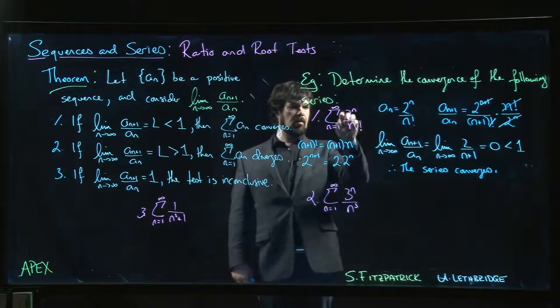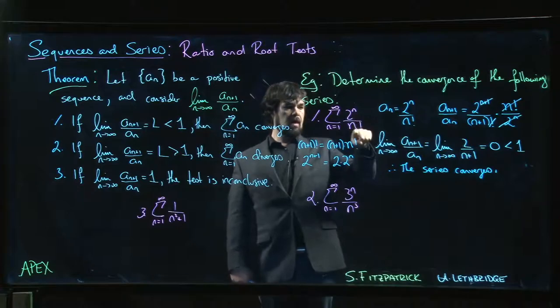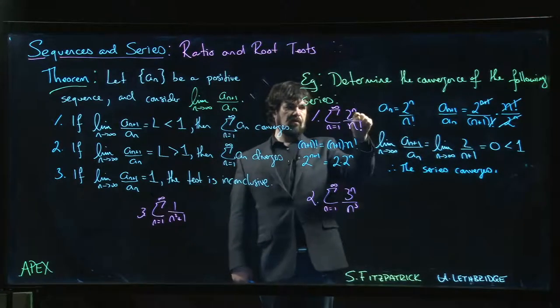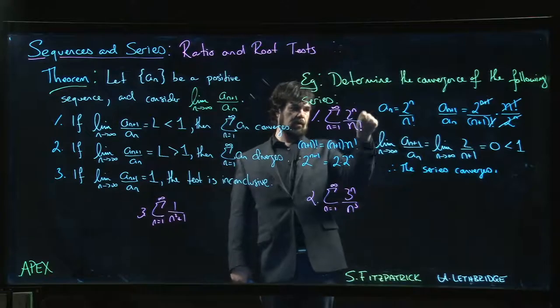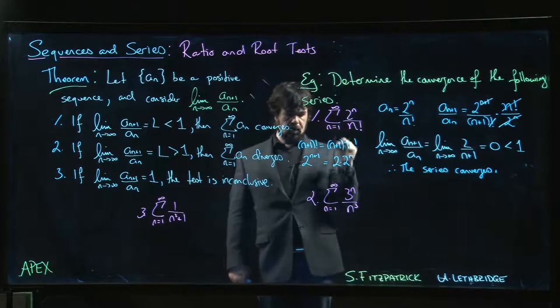Because two to the n, every time you increase n by one, you're multiplying by two up here. But down here, you're multiplying by one larger. First, you're multiplying by two over two, then two over three, then two over four, then two over five. So this is getting bigger on the bottom.